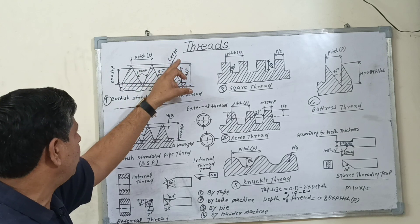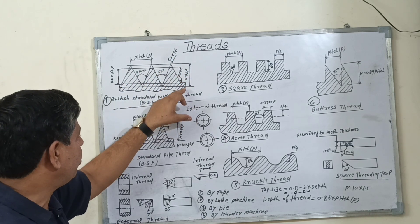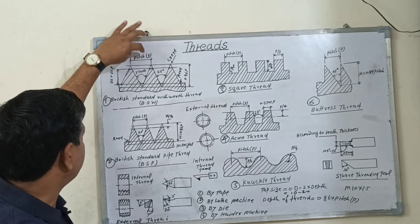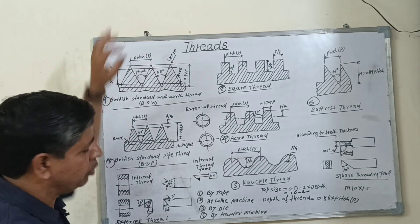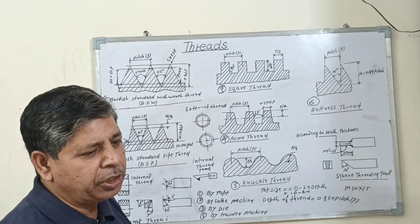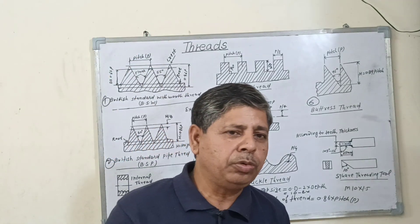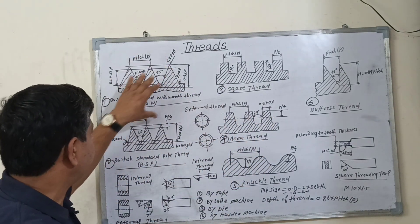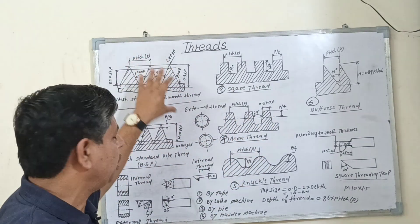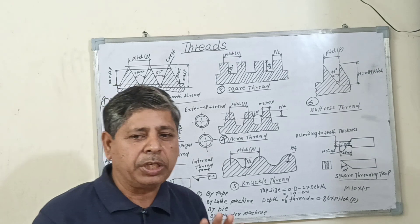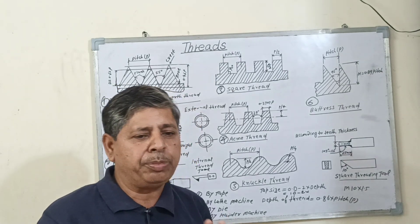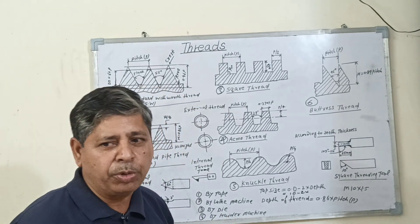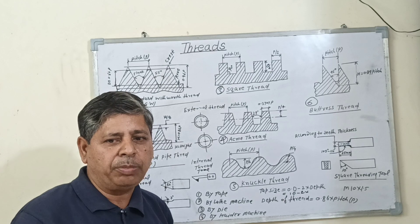The upper portion of the thread is called the crest. The lower portion of the thread is the root. The distance between the threads is called the pitch. The pitch is equal to 1 divided by the number of teeth per unit length. This type of thread comes in the inch system, represented as 1/2 inch, 3/4 inch, 3/8 inch.